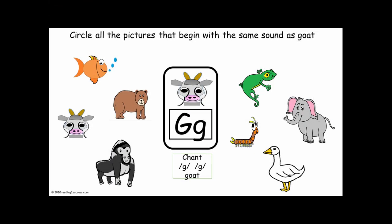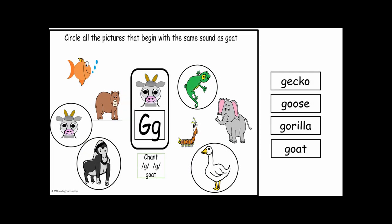In this activity, have kids circle all the pictures that begin with the same sound as Goat. Go over the chant G, G, G, Goat, and then help them with each picture: G, G, Gecko. Eh, Eh, Elephant. B, B, Bug. G, G, Goose. G, G, Gorilla. G, G, Goat. B, B, Bear. F, F, Fish. These are the answers.